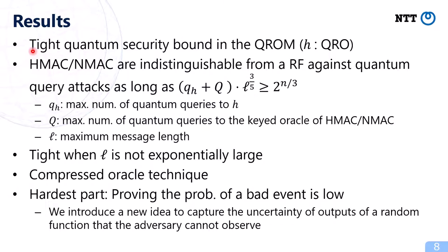We showed the tight quantum security bound of HMAC and NMAC in the quantum random oracle model, where the compression function H is modeled as a quantum random oracle. We showed that HMAC and NMAC are indistinguishable from a random function against quantum query attacks as long as a certain inequality holds. Here, q_H is the maximum number of quantum queries to the compression function, q is the maximum number of quantum queries to the keyed oracle of HMAC and NMAC, and L is the maximum message length. This bound is tight when L is not exponentially large. We use the compressed oracle technique to prove this bound, and the hardest part is to prove the probability of a bad event is very low. To prove this, we introduced a new idea to capture the uncertainty of outputs of a random function that the adversary cannot observe directly.